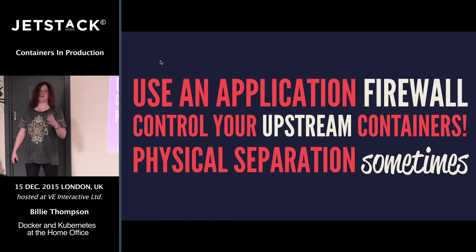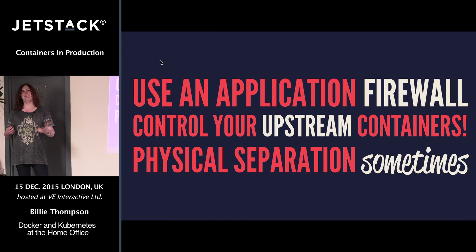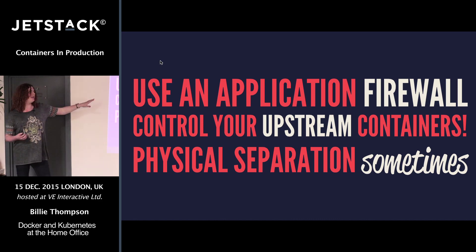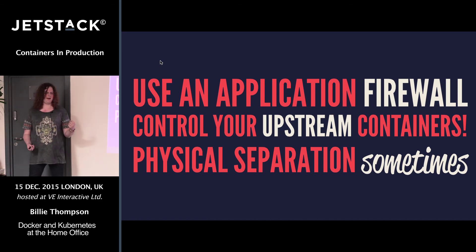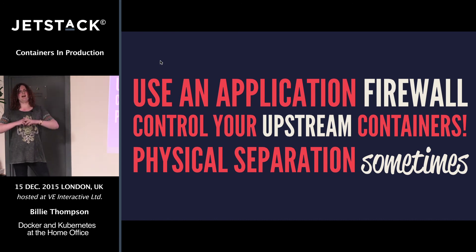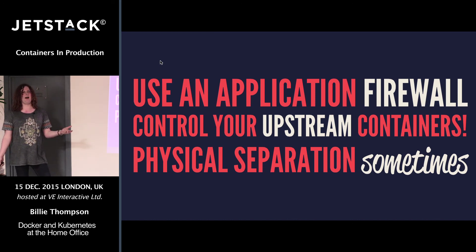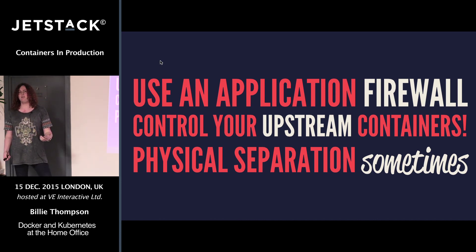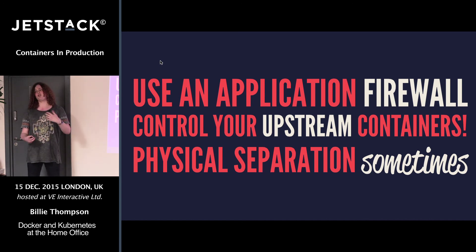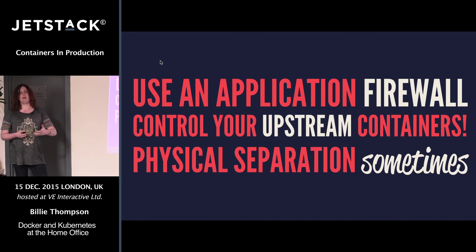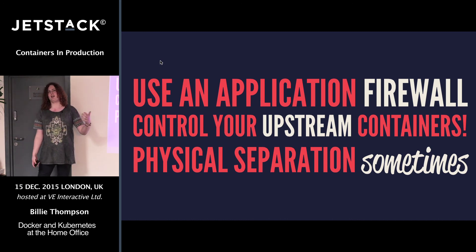Sometimes the framework you're using has a security bug in it, and you need to protect against that. Controlling your upstream containers is really important too. Docker Hub did a scan of packages installed in Docker containers in their registry — something like 80% had major security vulnerabilities. It's really important to know which containers you're extending from, so you can at least trigger a rebuild to pull in the latest upstream changes. We have a single base image where we know we have a reasonably up-to-date image to extend from.